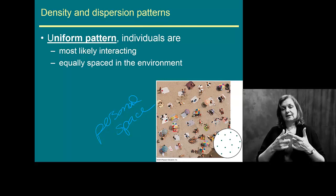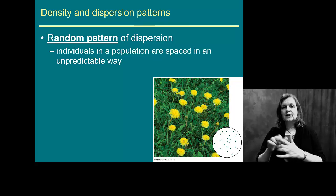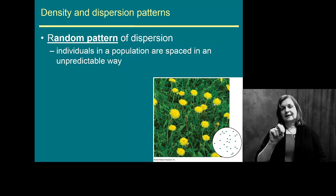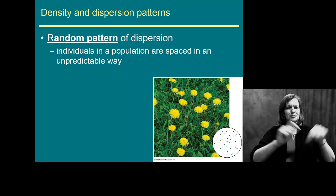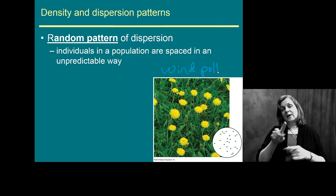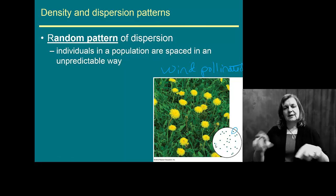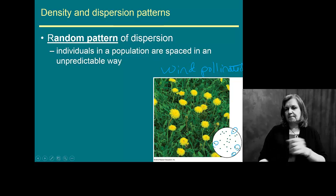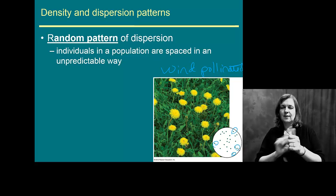Humans tend to spread out quite evenly — like in the beach picture here. That idea of personal space, giving room around where you're sitting. But other organisms, depending on how they're pollinated or how reproduction goes, can get very random patterns. Dandelions, for example — their distribution through spring, summer, and fall is very random, completely dependent on which way the wind blows. This dispersion pattern is important when looking at species interactions and competing for resources.